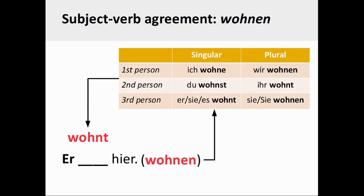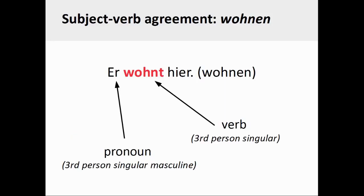We can also do the same procedure with the infinitive of the regular verb wohnen, or 'to live.' We take the infinitive form, drop off the ending, add the ending for the third person singular from the basic conjugation pattern, and drop this form, wohnt, into the sentence. The completed sentence, er wohnt hier, manifests subject-verb agreement in that both the pronoun and the associated verb are in the third person singular.